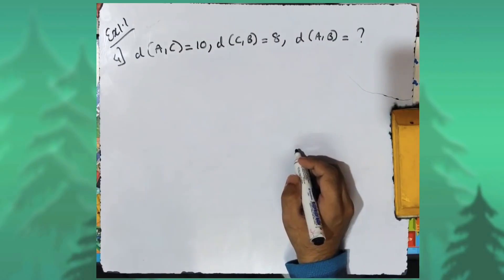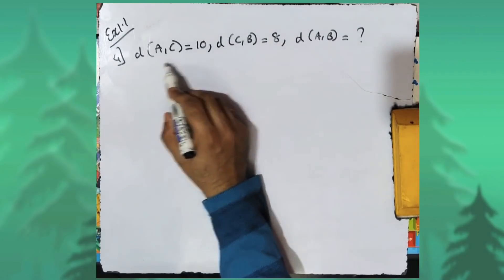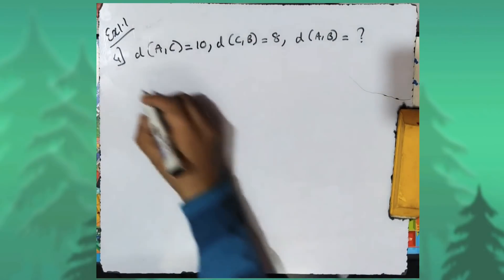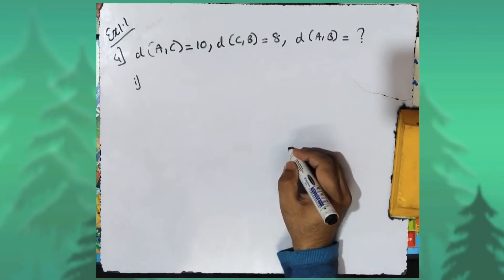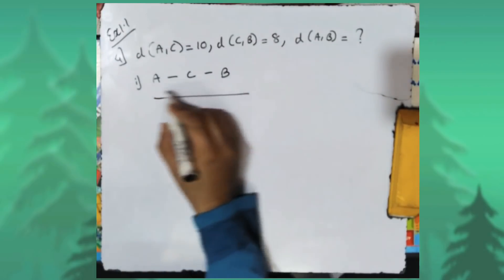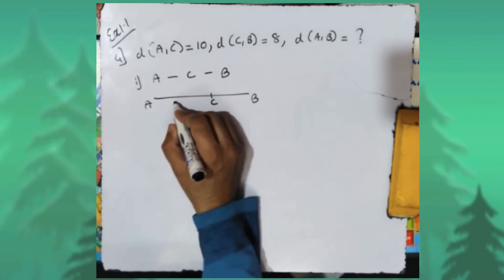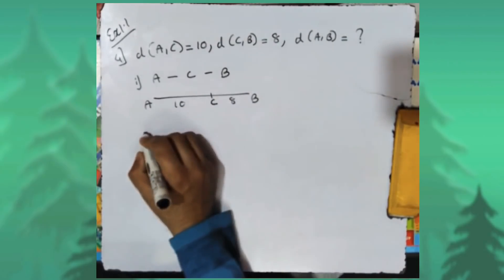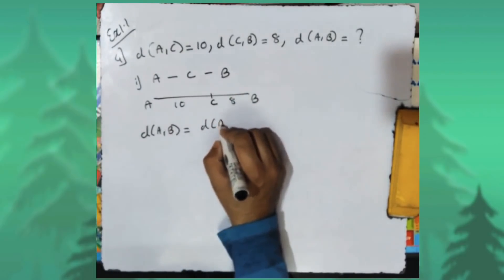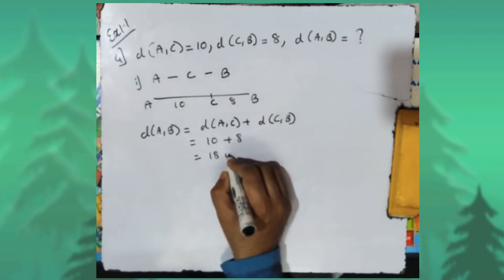In sum number four, on a number line three points A, B, C are given along with distances. Distance AC equals ten and distance CB equals eight; distance AB is to be found. Three possibilities can be considered. First possibility: point C is between A and B. In this case, distance AB equals distance AC plus distance CB, which is ten plus eight, equals eighteen units.